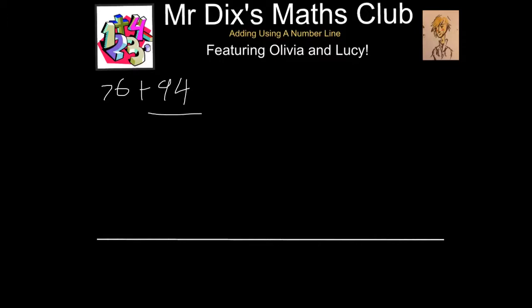First underline the biggest number. Then draw a neat line and put your number underneath. Partition the number you are going to add on.